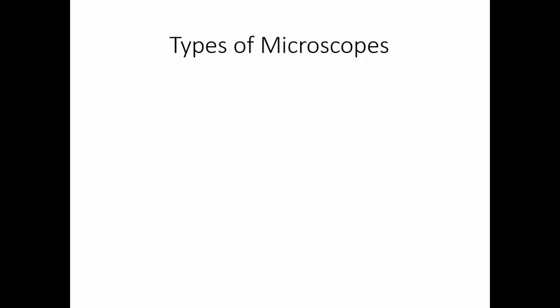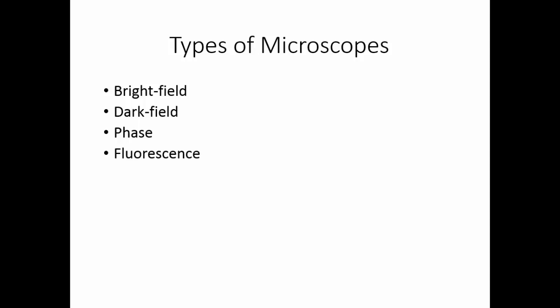There are basically five types of microscopes. The bright field microscope is the most common — when you look through the ocular, you see a lighted circle and the object appears dark against that lighted background. Dark field microscopy has a dark field with the object appearing light. The phase microscope plays tricks with light to help you see things better. The fluorescent microscope uses special staining with ultraviolet light, including a special type called the confocal microscope. The electron microscope uses electrons as the magnifying radiation and includes the scanning electron microscope, transmission electron microscope, and probe electron microscope.